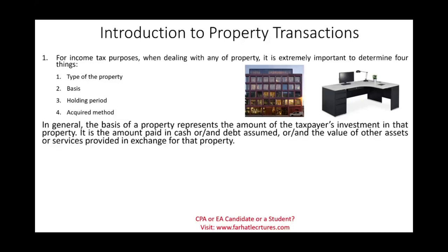Starting with the basis of the property — in general, the basis represents the amount that the taxpayer invested in that property. Usually you pay cash for the property. Sometimes you may purchase a property and at the same time assume some debt, taking over the debt of that property. That's also part of your investment because you cannot own the property unless you pay off the debt. Sometimes the value of other assets or services provided is the amount of your investment — if you don't have money to pay, you provide a service or exchange an asset, and the value of that is your basis.